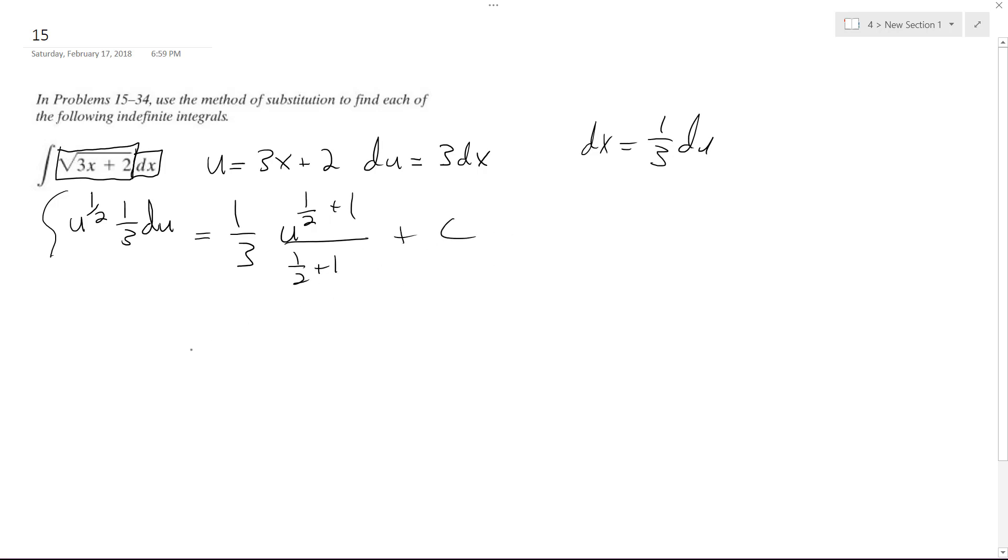So what I have then is 1 third times u raised to the 3 halves, when you add 1 and 1 half together. And then 1 half plus 1 is 3 halves. Dividing this, reciprocate it, so I get 2 over 3 on the bottom, so then 1 third times the 3 on the bottom.